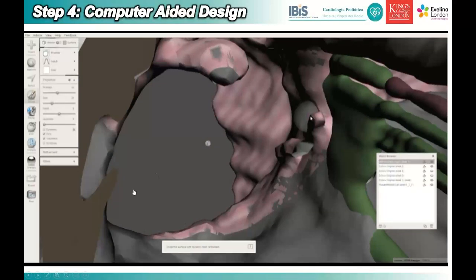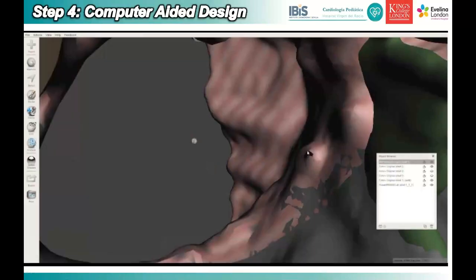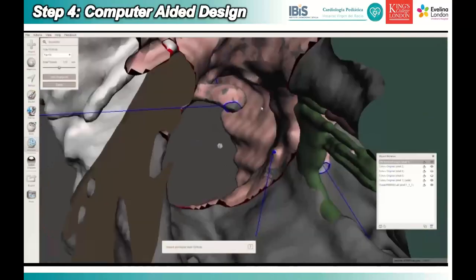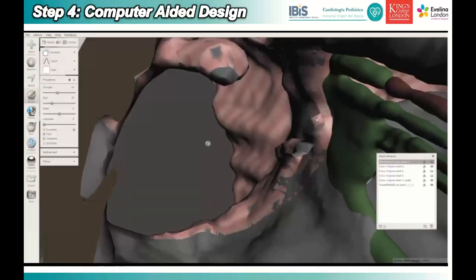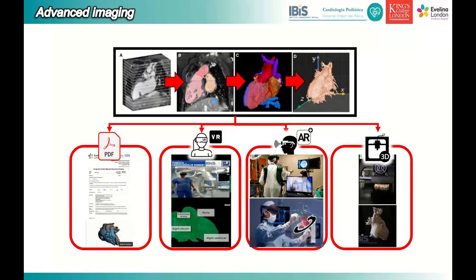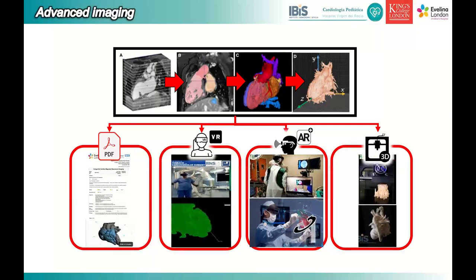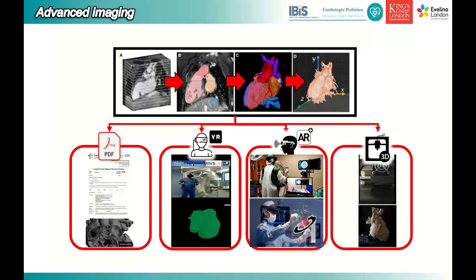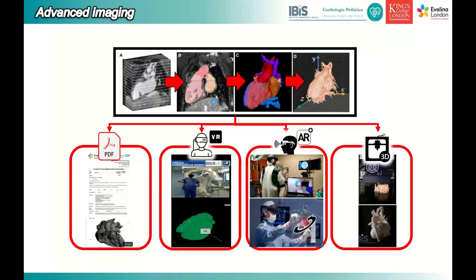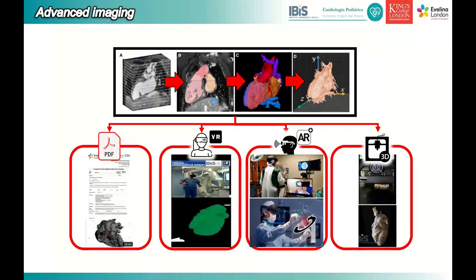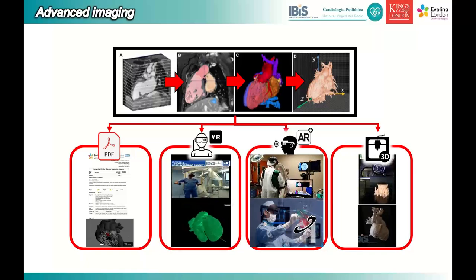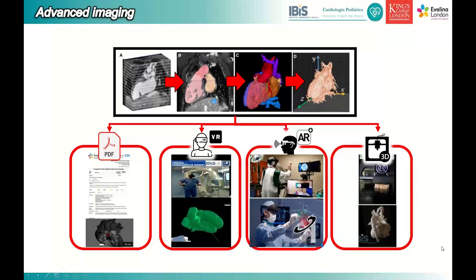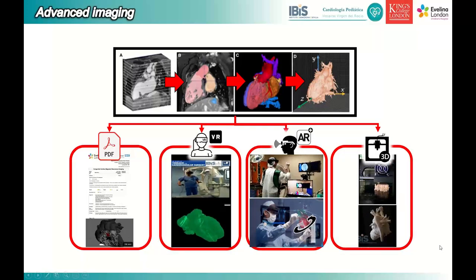After finishing the segmentation, the next step is correcting the geometry. Sometimes you see a VSD in the planned geometry that isn't really there, so you need to correct that manually — this is where the engineer and clinician work together. Once you have the 3D geometry, you can decide: send it to PDF, virtual reality, augmented reality, or 3D printing. Similar to multimodality imaging, each visualization tool has limitations and strengths.